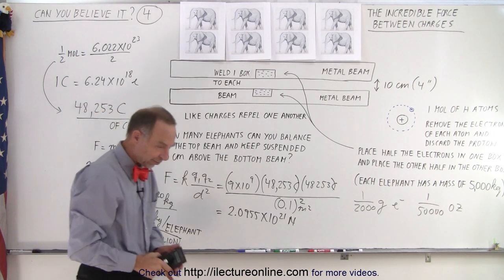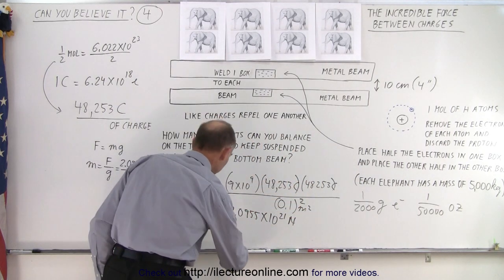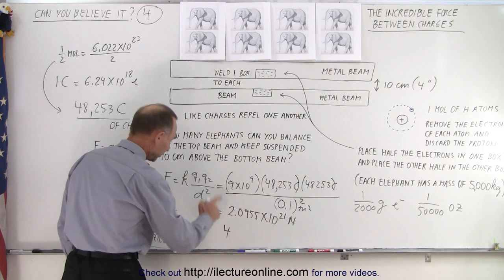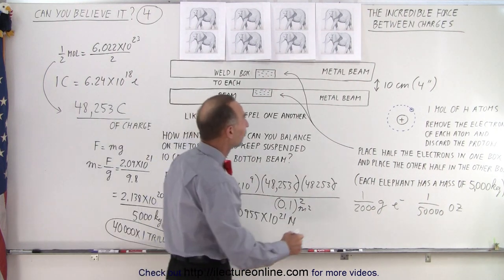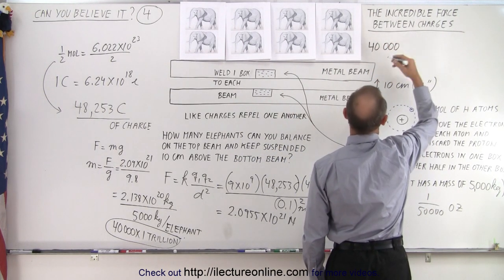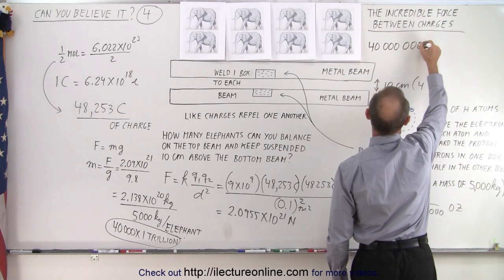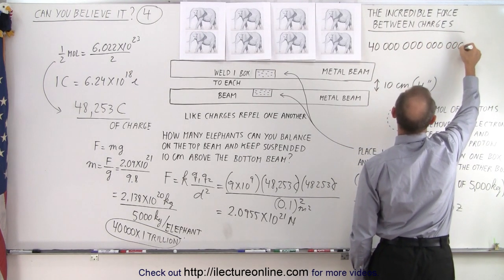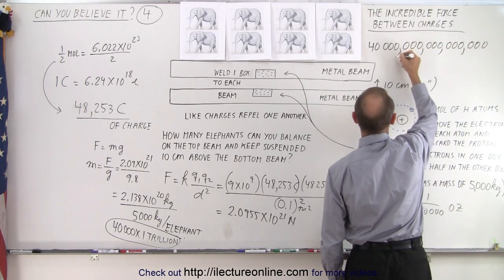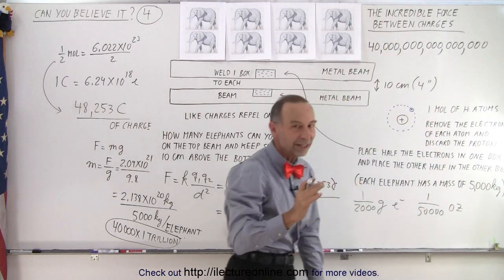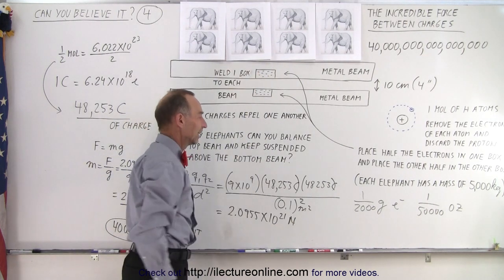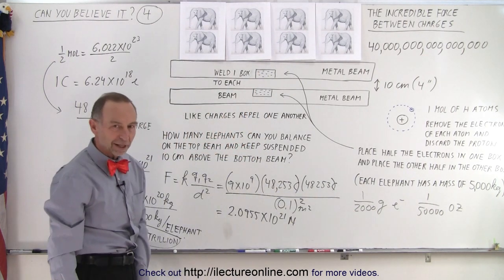Let's write down 40,000 trillion. So 40,000, and on trillion is 12 zeros. 1, 2, 3, 4, 5, 6, 7, 8, 9, 10, 11, 12. So this is thousands, millions, billions, trillions. 40,000 trillion elephants can be supported by the repulsive forces of a small fraction of a gram of electrons.